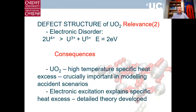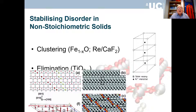These simple calculations were also able to show that the disproportionation energy — the Mott-Hubbard gap — is about 2 eV. This explains the very large specific heat excess observed experimentally at high temperature in UO2, which is crucially important in modelling accident scenarios. This was used in a very detailed study by Marshall Stoneham and John Harding to develop a detailed theory of the high temperature specific heat, all collected together in a paper published in the late 1970s in the Proceedings of the Royal Society.